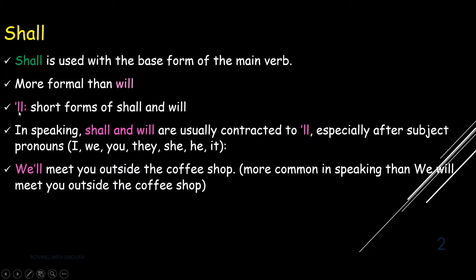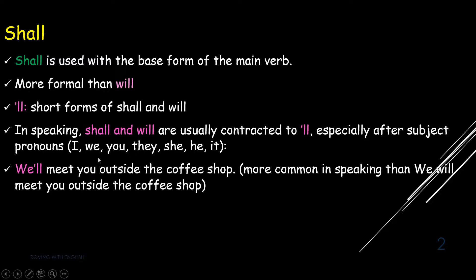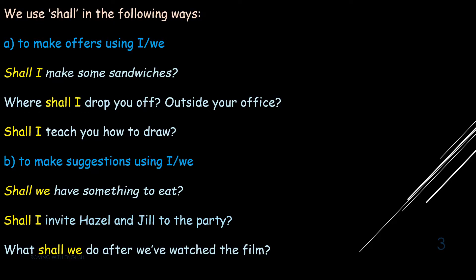Shall is more formal than will. The short form of shall and will is apostrophe-LL, like 'we'll'. When speaking, shall and will are usually contracted to apostrophe-LL, especially after subject pronouns like I, we, you, they, she, he, and it. When you speak fast, 'we will meet you outside the coffee shop' automatically becomes 'we'll meet you outside the coffee shop'.